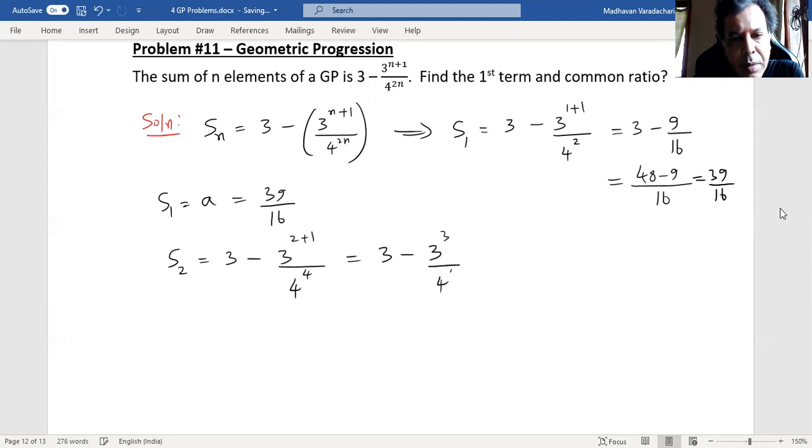Divided by 4 to the power of 4, and that is 3 minus 3 to the cube, which is 27, and 4 to the power of 4 is 16 into 16, which is 256. So this will give us, considering LCM as 256, 768 minus 27.